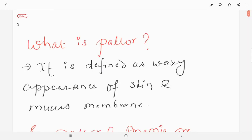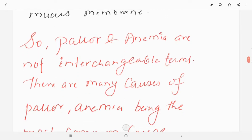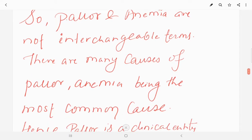So we talked about anemia, which is detected clinically by pallor. So what is pallor? Pallor is defined as waxy appearance of skin and mucous membrane.